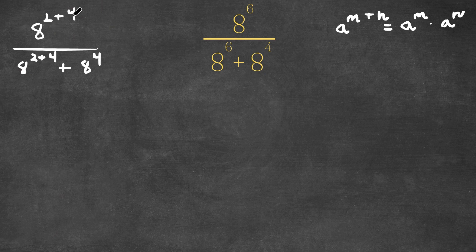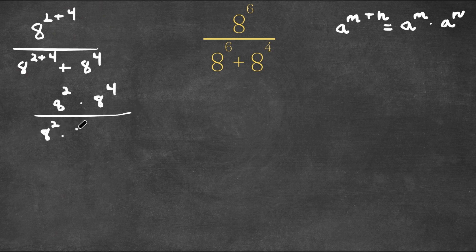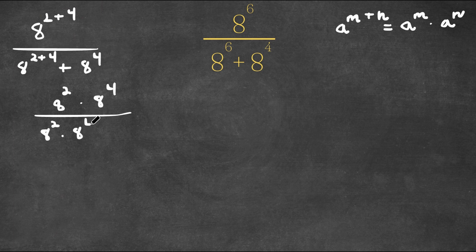So 8 to the power of 2 plus 4 will equal 8 to the power of 2 times 8 to the power of 4. And we are dividing this by 8 to the power of 2 times 8 to the power of 4 plus 8 to the power of 4.